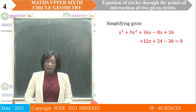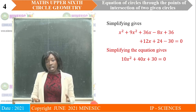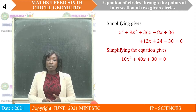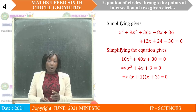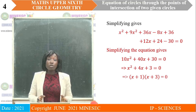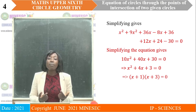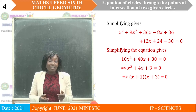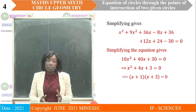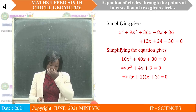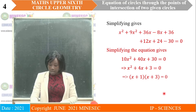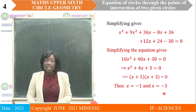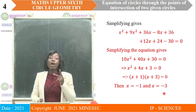Simplifying that equation, we obtain a quadratic equation. This quadratic equation has real distinct roots — and that should already tell you something about the next part of the question, which asks whether the line is tangential to the circle. Simplifying gives 10x² + 40x + 30 = 0. We get x = −1 and x = −3, meaning we are going to have two points.